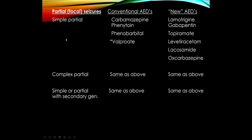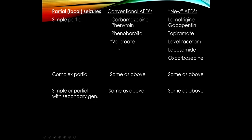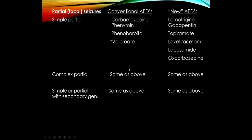This applies whether we're dealing with a partial complex seizure or a focal seizure with secondary generalization. For generalized onset seizures, the drug of choice for absence is ethosuximide, but we can also use lamotrigine or valproic acid. Valproate works for all of the generalized onset seizures and also for partial or focal onset, making it a broad-spectrum medication.